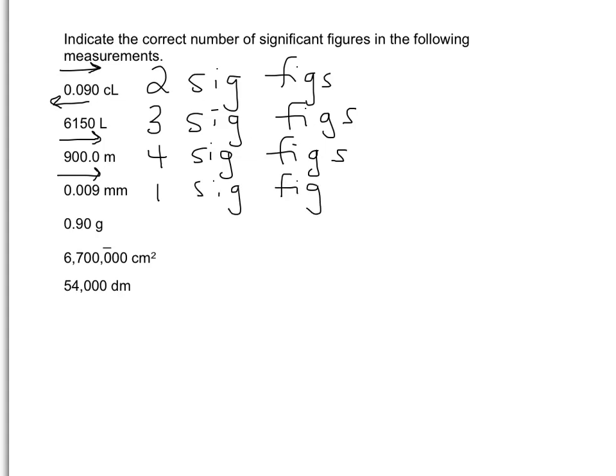So only one measured digit, but it's a pretty good digit to have measured the thousandths place. 0.90 — decimal point, count to the right — two significant figures. Think about the significance of that zero: without it, you'd only have one significant figure, saying you only measured to the tenths place, as opposed to the hundredths place in 0.90.